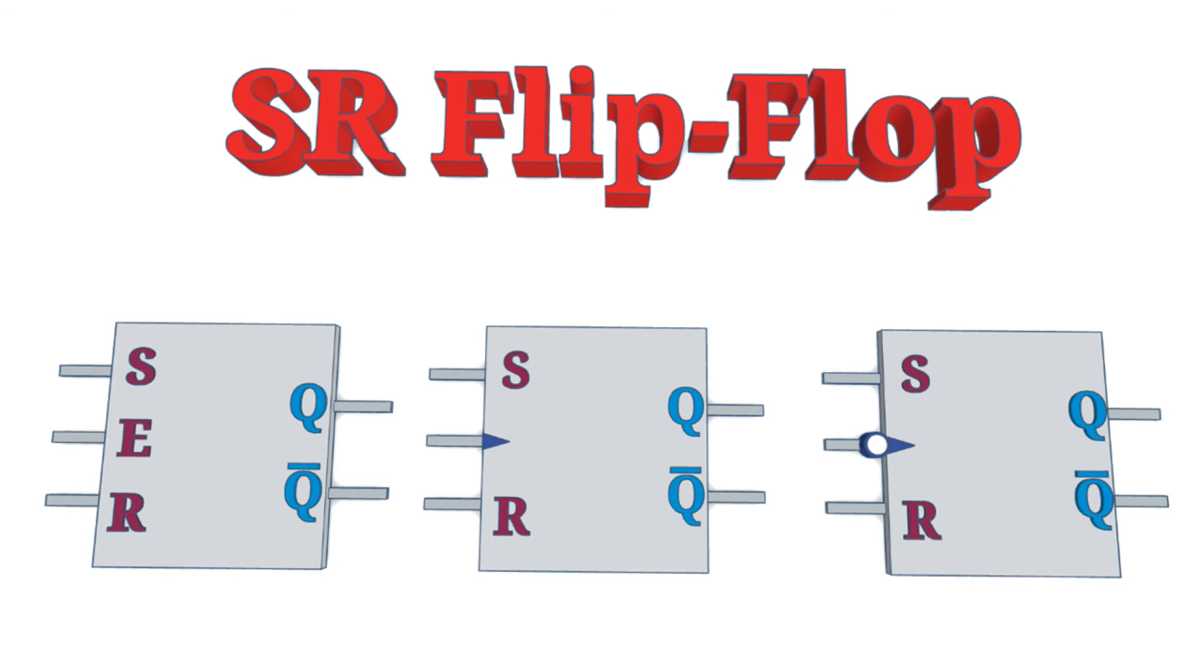As with the basic flip-flops, there should not normally be an instance where S and R are both high on the same clock signal. However, this is normally handled properly. In the case of the SR flip-flop, the set is usually dominant. Or an RS flip-flop is the same, but where both are one, then the reset is dominant.